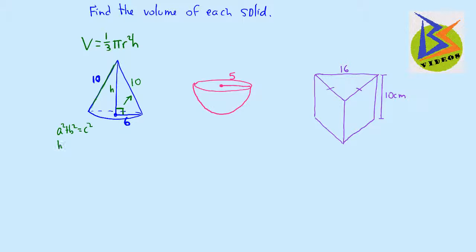And so let's just make h our a. So h squared plus 6 squared equals 10 squared. So we have h squared plus 36 equals, it does not equal 64, it equals 100.